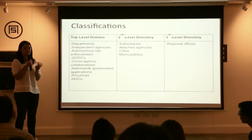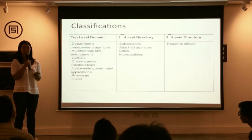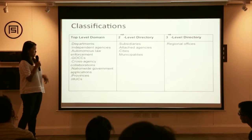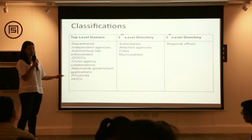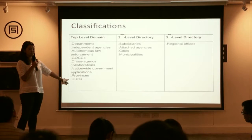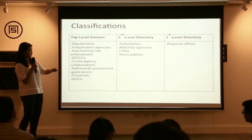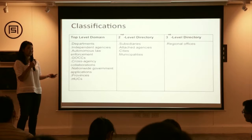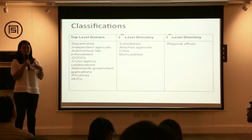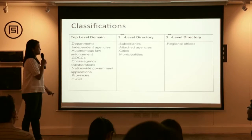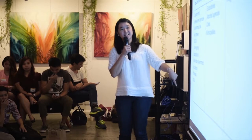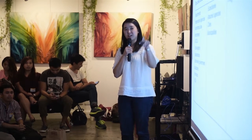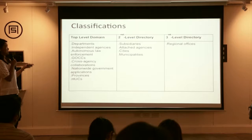And nationwide government applications. Also at the top level: provinces — for example, laguna.gov.ph — and highly urbanized cities. These two have some leeway because mayors and governors want their websites to be well-known. Second-level directories are subsidiaries, attached agencies, cities of provinces, and municipalities of provinces. Third-level directories are regional offices. That's the structure we're aiming for in the DNS landscape of gov.ph.